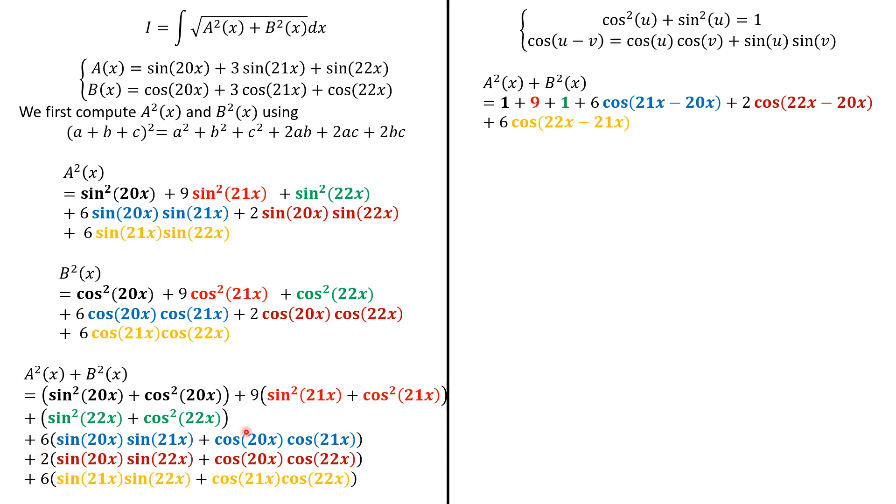Now, for the term in blue, we're going to have cosine of 21x minus 20x. And in this red, we're going to have 2cos(22x - 20x). And here, in orange, we're going to have 6cos(22x - 21x). Rewrite as follows: 9 here, 1 plus 1 is 2, plus 6cos(x). And here, 6cos(x) and 2cos(2x) for this term.